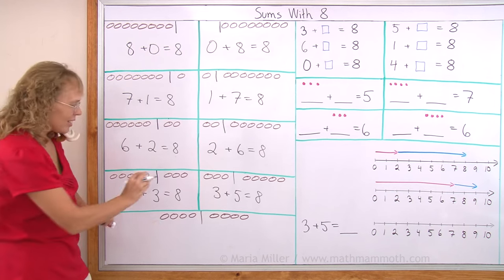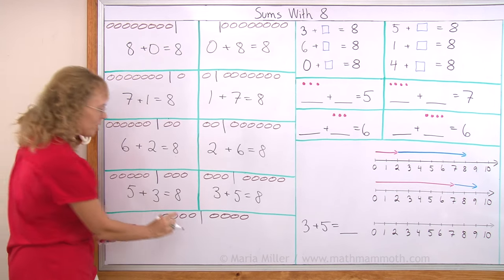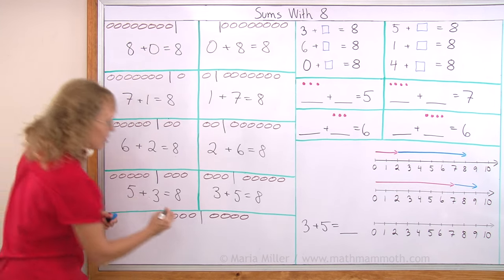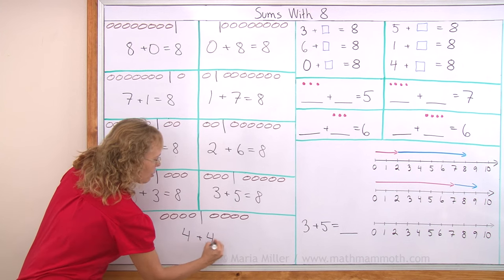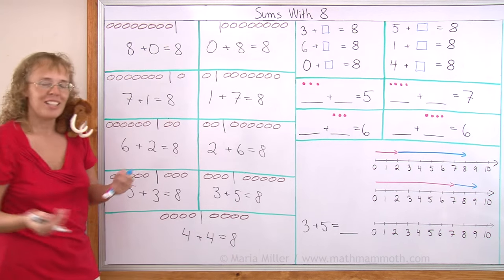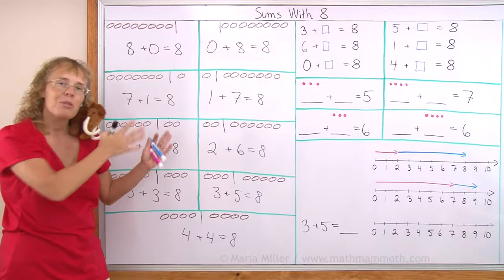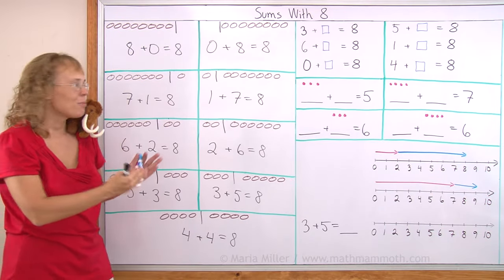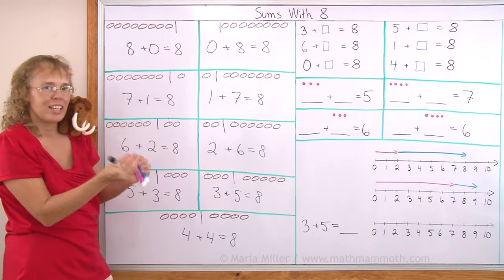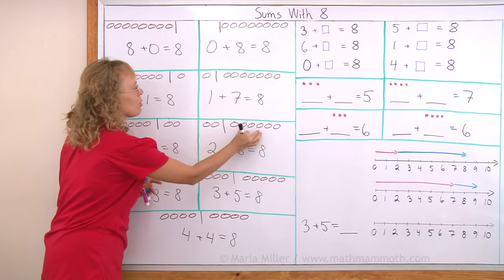And lastly, this is the even division or the same amount in both groups. 4 and 4. That would be fair if you had a brother or sister to share with. I want you to remember these different ways to make 8, different ways to take 8 things and divide them into 2 groups.